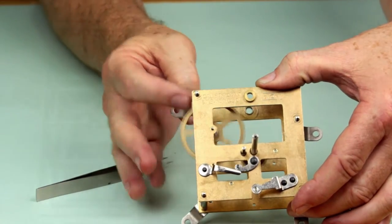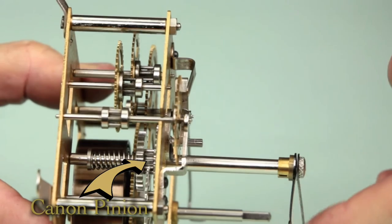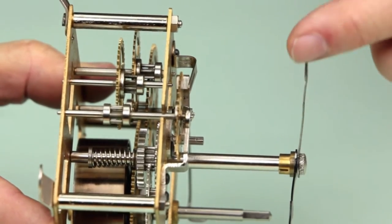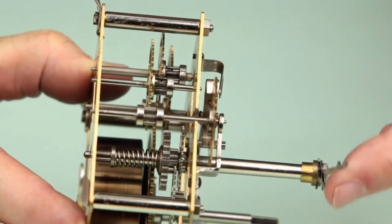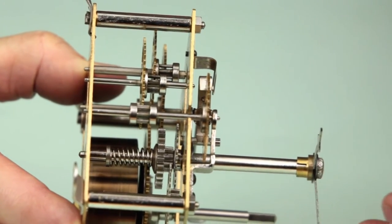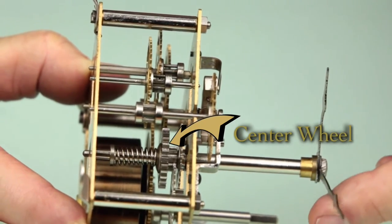When setting the clock, the cannon pinion slips against the tension of the spring holding the center wheel against it, and allows the hands and motion works to move to set the time without interfering with the running of the going train. The cannon pinion will move by slipping against the center wheel, which remains locked into the second wheel of the going train.